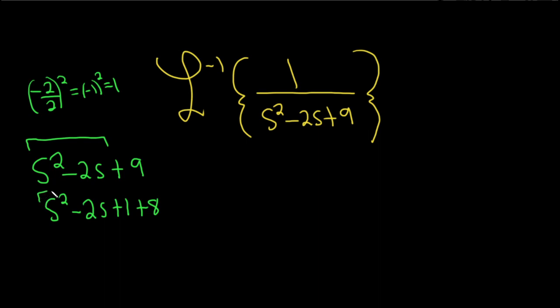So this factors - it's called a perfect square trinomial. You write s in parentheses, keep the sign, and divide the coefficient by 2 to get 1, giving you s minus 1 squared. Then we have the plus 8.